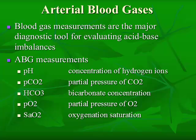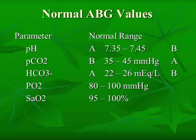The PO2 and SAO2 levels are secondary parameters when you're assessing acid-base balance. These levels do not directly determine acid-base disorders, but rather provide information that may assist in determining the underlying cause. Remember, a PO2 less than 80 mmHg indicates hypoxemia, and an SAO2 of less than 95% indicates a decrease in hemoglobin saturation with oxygen.